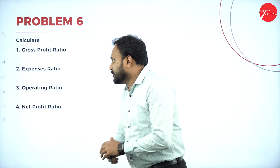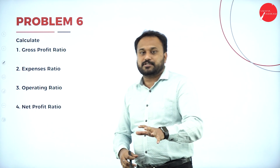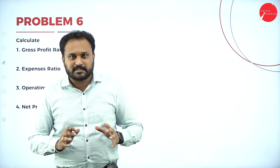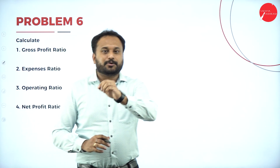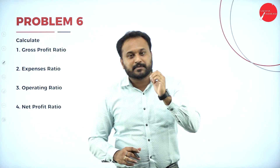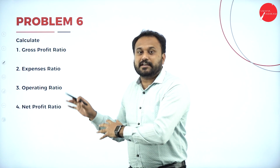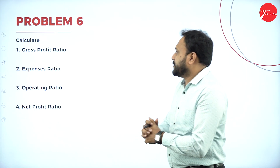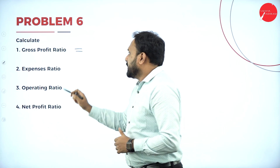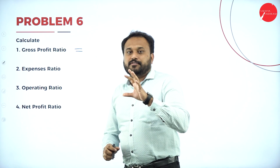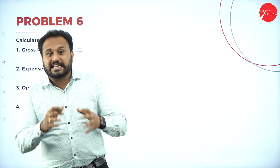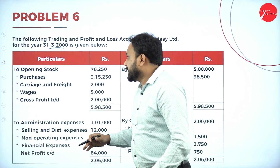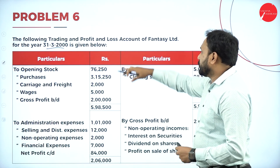Let's go with the question first. They are asking us to calculate: Gross Profit Ratio, Expenses Ratio, Operating Ratio, and Net Profit Ratio. If I know the formulas, I just need to pick the answers from the question itself — the question and the answer are both right there. Let's go with the first one: Gross Profit Ratio.